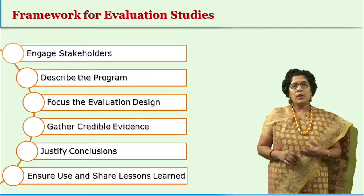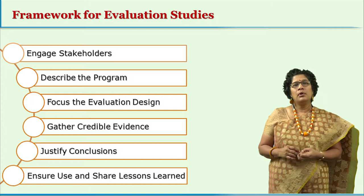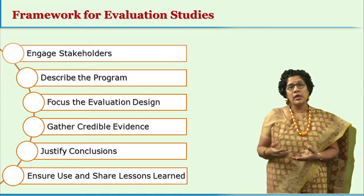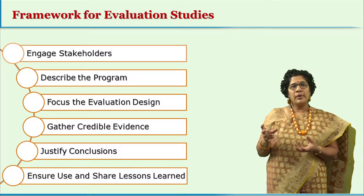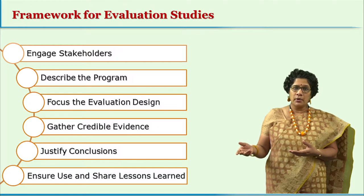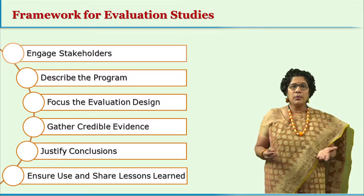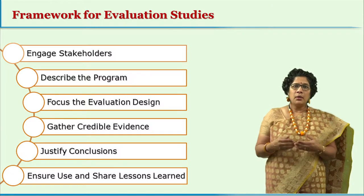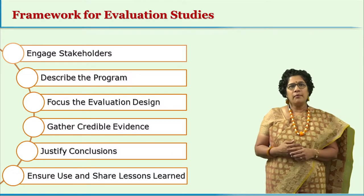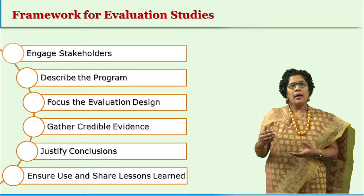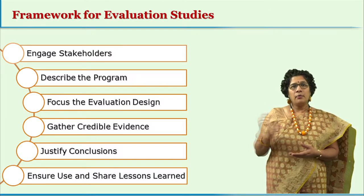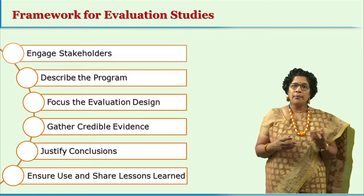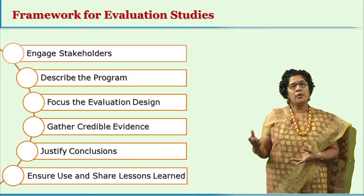The sixth and final step is to ensure use and share lessons learned. This is a very important stage because the lessons learned could be useful for other programs and other organizations as well. If a particular skill set is needed by the world of work, other educational institutions or universities can focus on developing those skills in their students and design coursework accordingly. Thus, program evaluation is a very systematic and scientific study that yields important conclusions useful not only for program designers but also for the world of work.